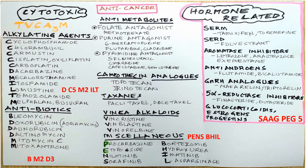Among the hormone-related drugs, we have SERMs or selective estrogen receptor modulators — examples are tamoxifen and toremifene. The SERDs or selective estrogen receptor down-regulators — we have fulvestrant. Among the aromatase inhibitors we have letrozole, anastrozole, and exemestane.